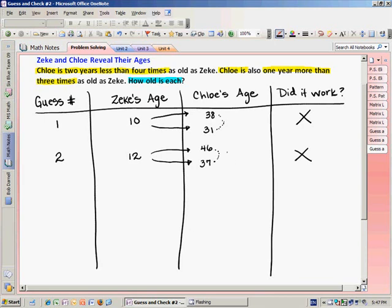So I do want you to stop and notice something. The difference between 46 and 37 is 9. And in my first guess, the difference between 38 and 31 was 7. And if I need to find two numbers in Chloe's age that are the same, and my difference is getting further apart, then that indicates that when I went from guessing 10 to 12, I guessed in the wrong direction. So in guess 3, I now know that I need to guess less than 10 for Zeke's age.